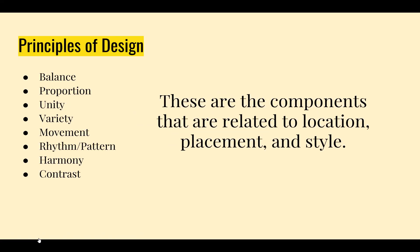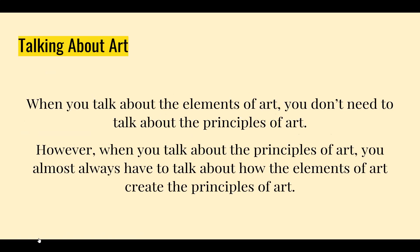We're going to go through those a little bit more when we look at our examples. When you're talking about art, you can talk about the elements of art as a standalone subject — you can identify them in artwork and talk about one aspect at a time. But when you're talking about the principles of art, it's much more complex and you're talking about combinations of elements and principles.